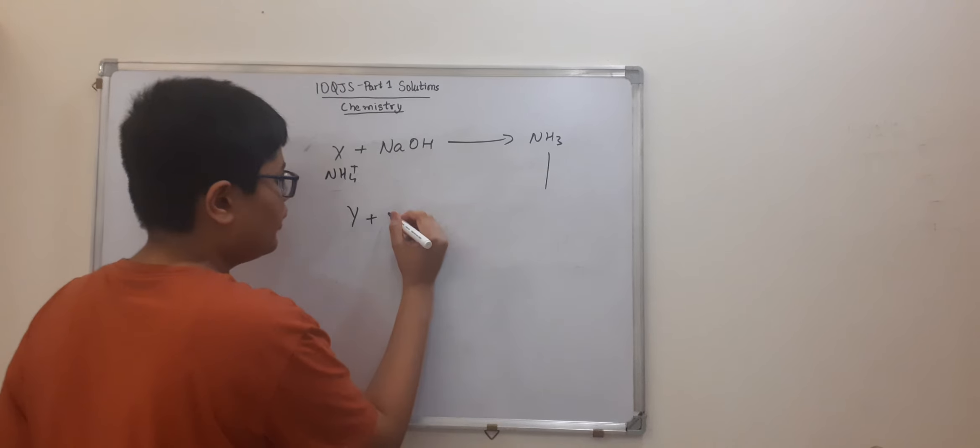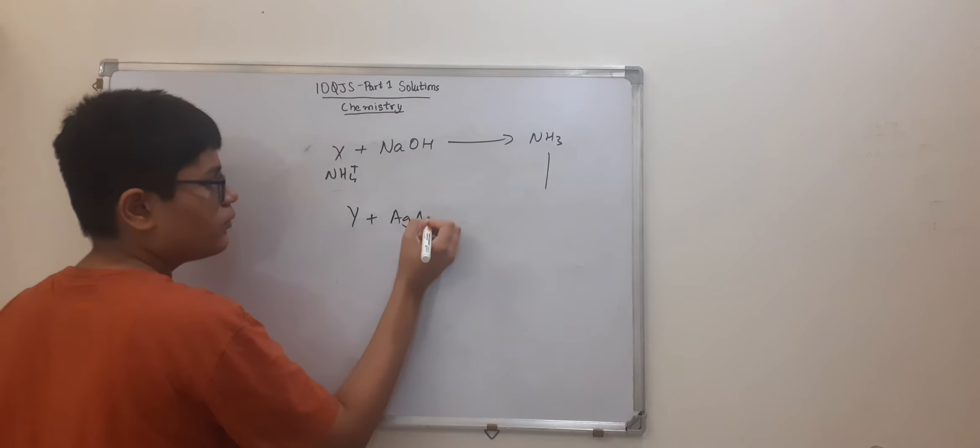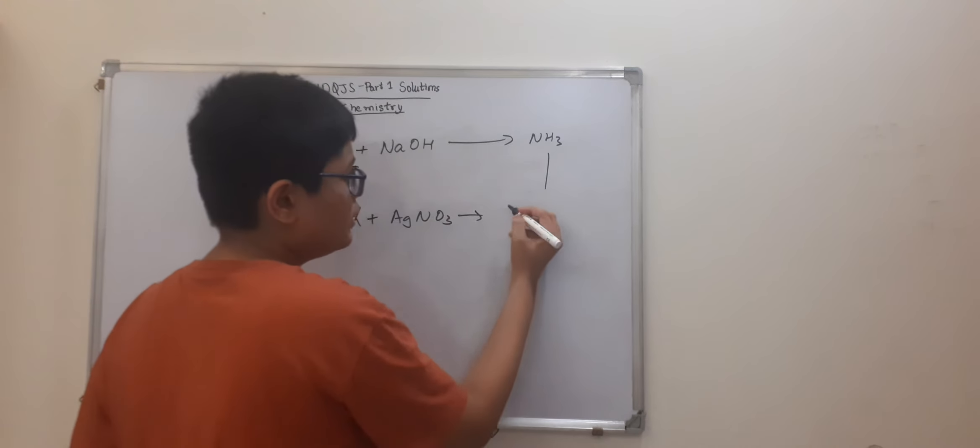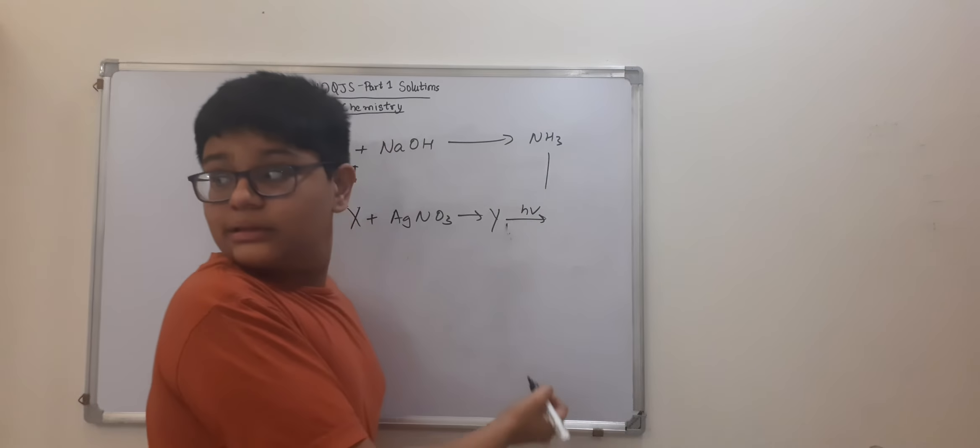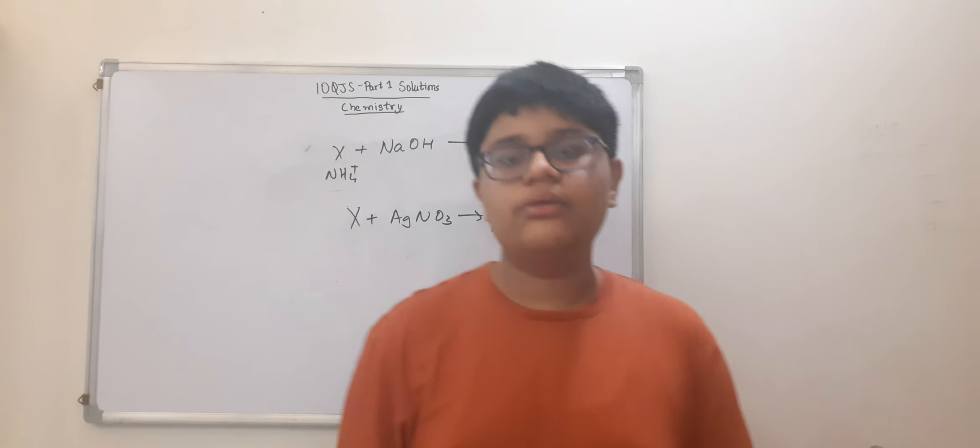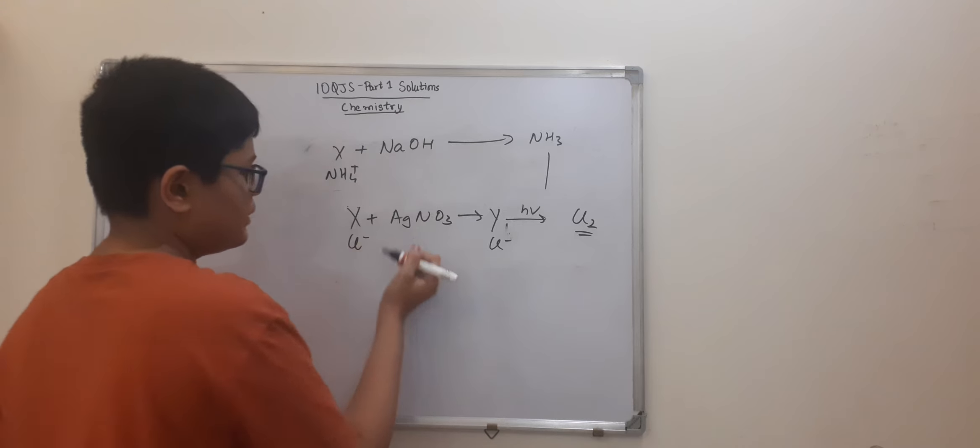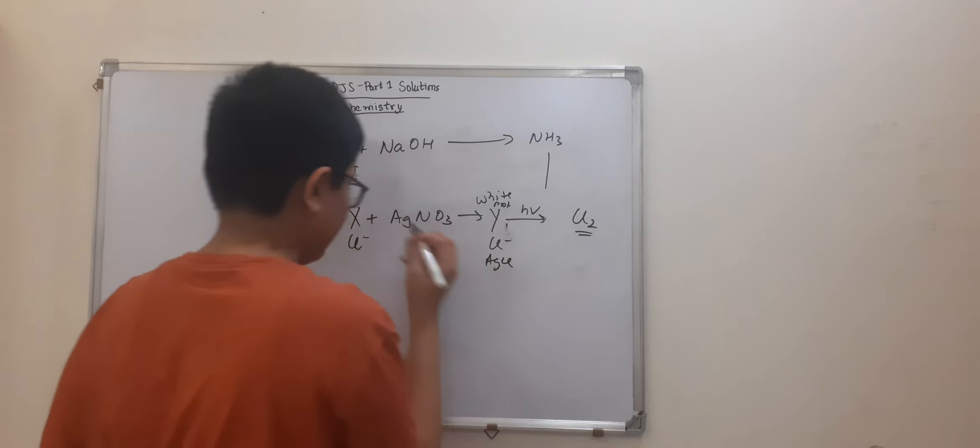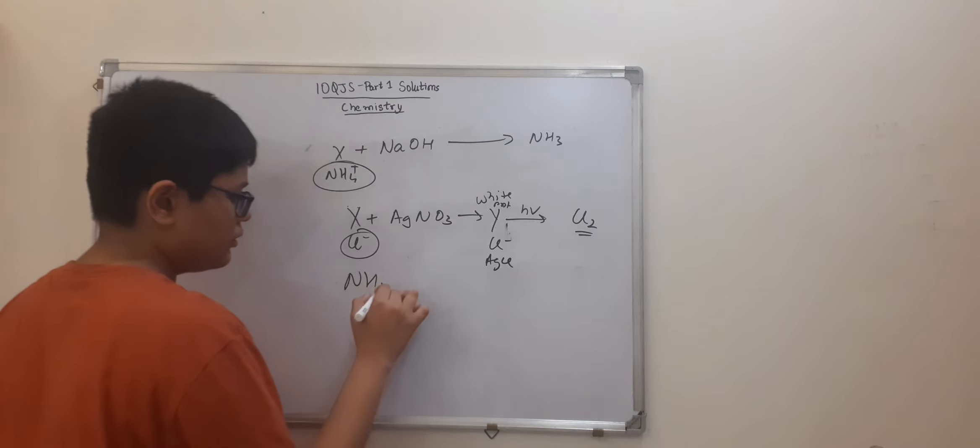Now X when treated with AgNO3 gives us Y. And this on exposure to sunlight gives us chlorine. Why chlorine? Because it is a pale greenish, yellowish gas. So this means that chlorine Cl minus ion is present in Y. Which means that Cl minus ion is present in X. And clearly since Y is a white precipitate, you can say that Y is AgCl. And therefore X, since it has Cl minus and NH4 plus.